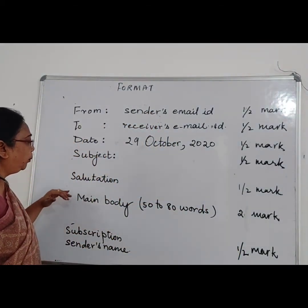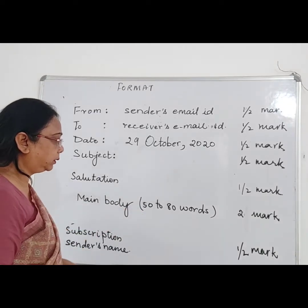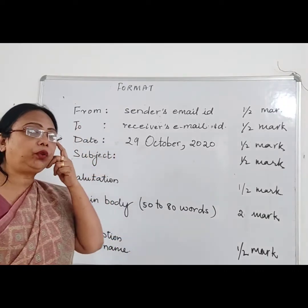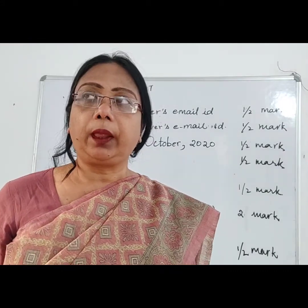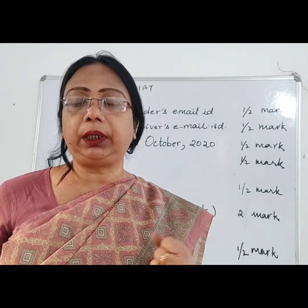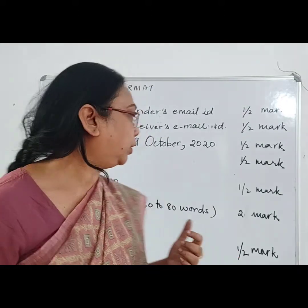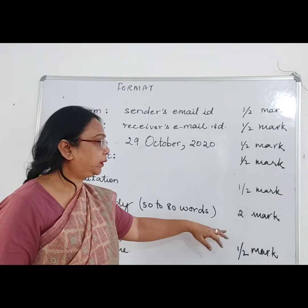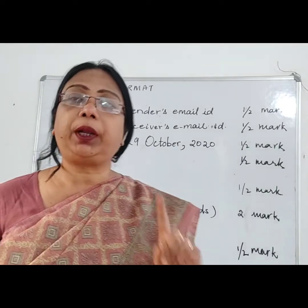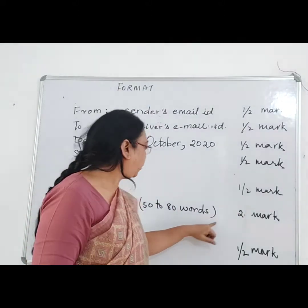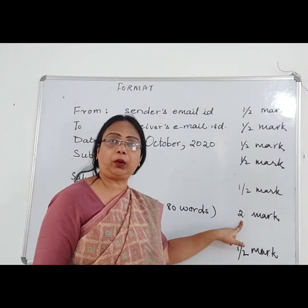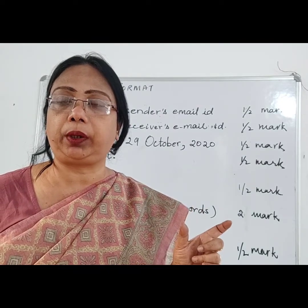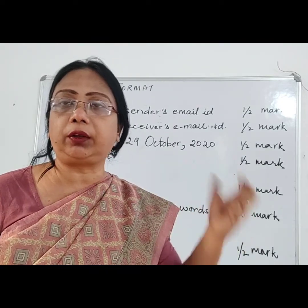Then comes the Main Body. The main body should be 50 to 80 words — not more than that. If you try to write more than that, it will be dangerous for you because that might be a negative point leading to deduction of marks. The more content you write, the more mistakes you make — grammatical mistakes or spelling mistakes — because in English, even spelling mistakes are marked. For the body content, it is worth two marks, so keep it short, sweet, and crisp.